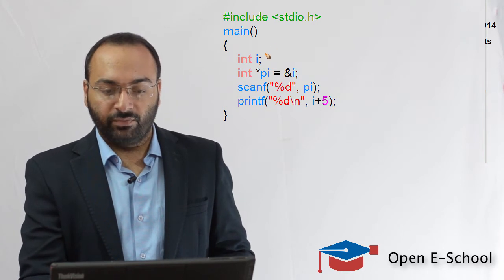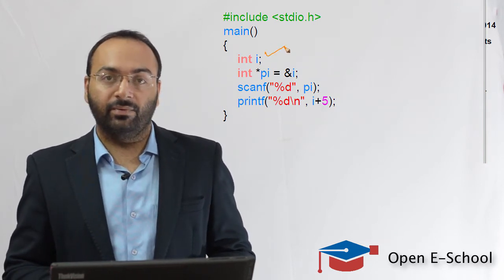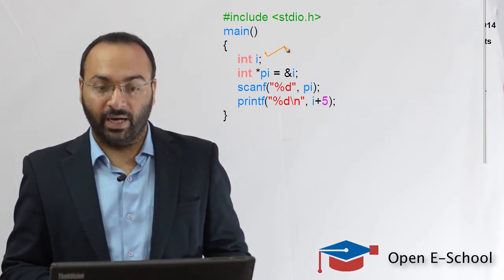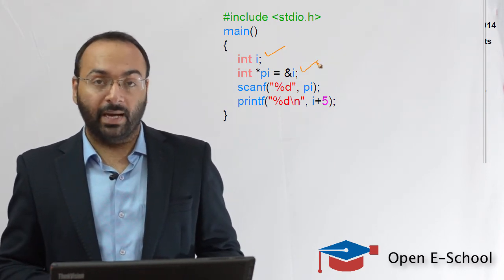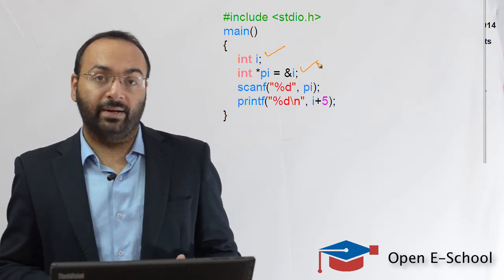As you can notice, the first line in the program is simply declaring a variable which is integer i. The second line in the program is actually declaring a pointer pi which is pointing to the address of i.